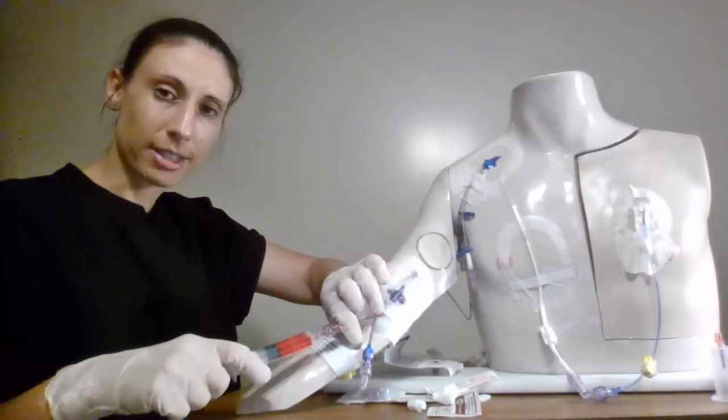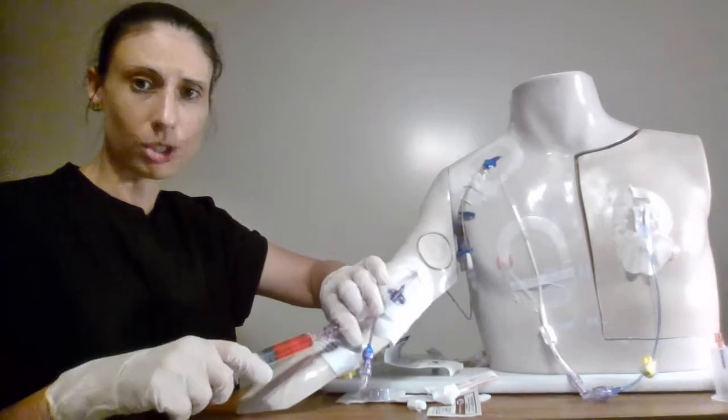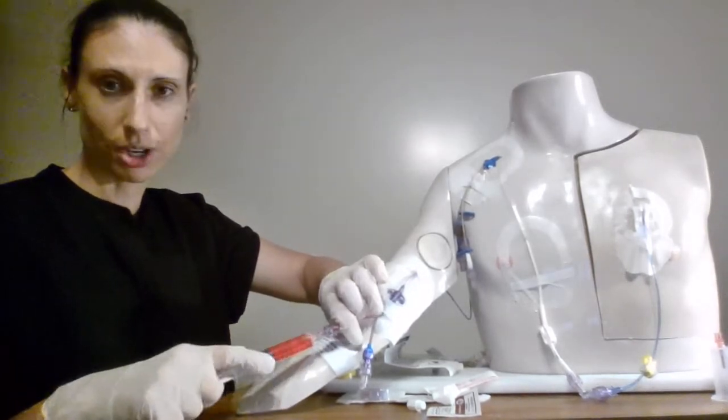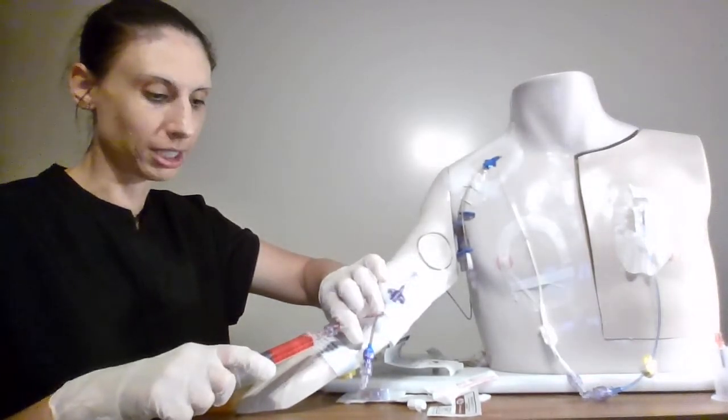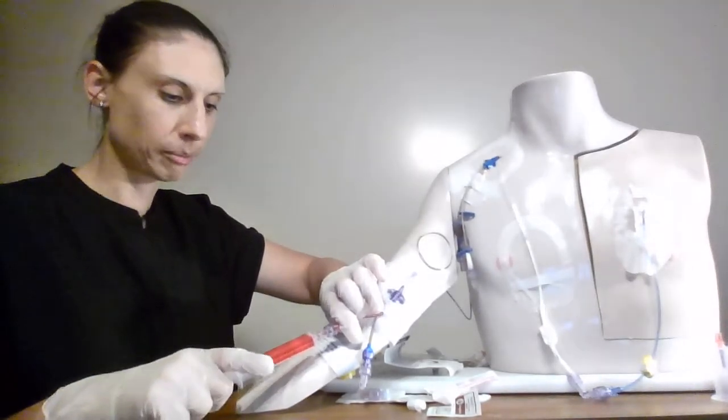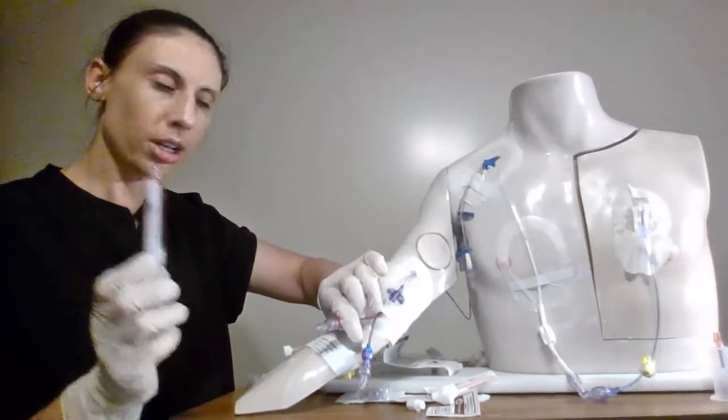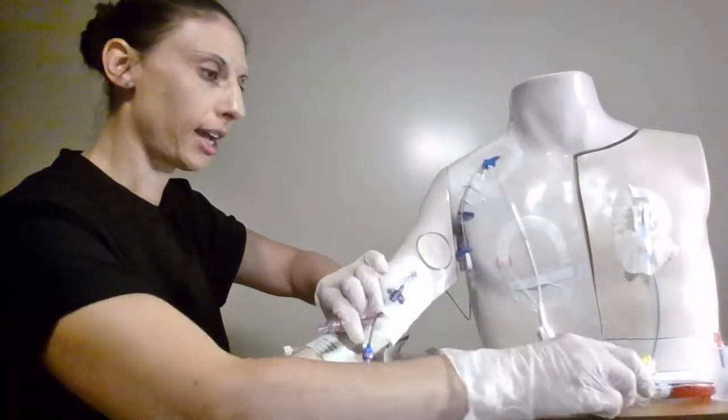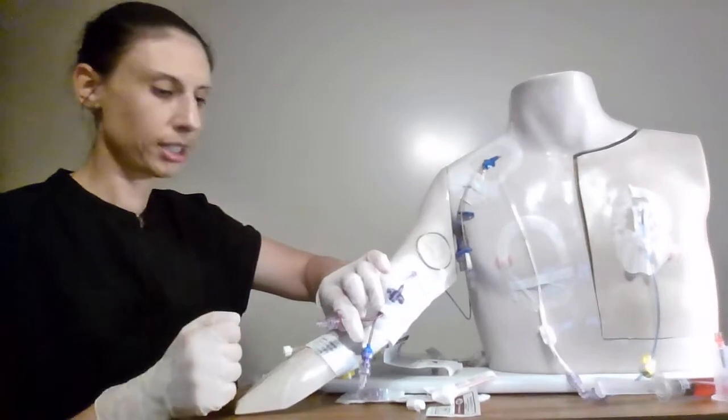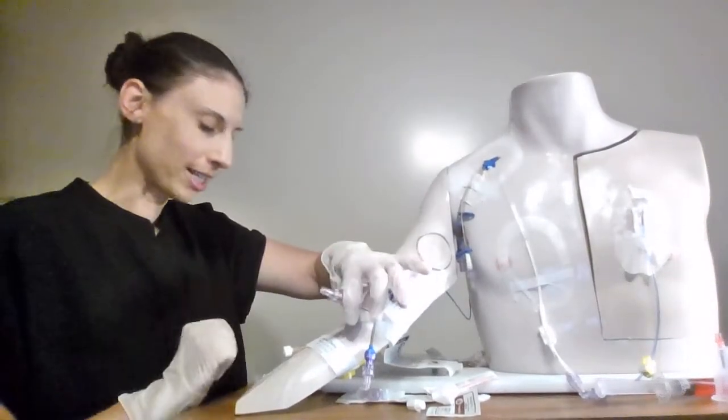So minimum six cc is what I'm going to pull back however remember PICs are a little bit long so we can always draw a little bit extra to make sure that our sample is not contaminated. So you could even draw up to about eight or ten cc's. So once I've taken my discard I'm going to throw that into the appropriate container like sharps container and since there's no clamps there's nothing to clamp I can just take that right off.